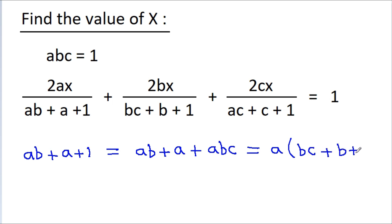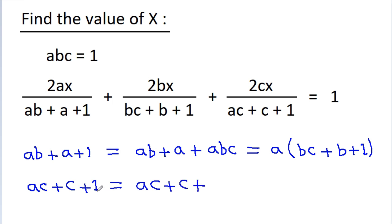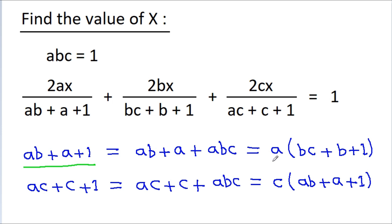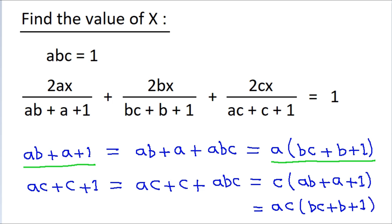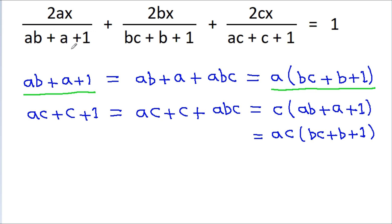bc + b + 1 is also the denominator of the second term. For the third term the denominator is ac + c + 1. Writing 1 as abc and taking c common gives ab + a + 1, and ab + a + 1 equals a times (bc + b + 1).